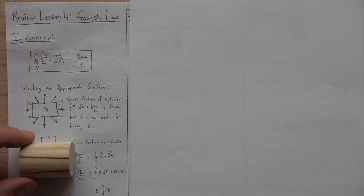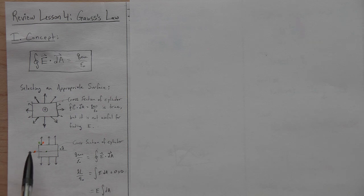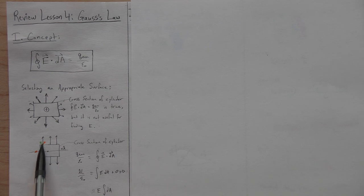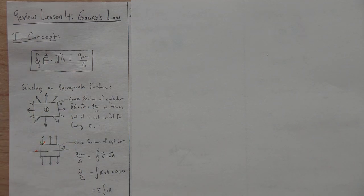Surrounding the wire with a cylinder works because if I take a portion of the wire and it's positive, it makes an electric field pointing directly away. Taking a symmetric point to the right at the same distance, the horizontal components cancel. So the electric field, if the wire behaves as infinite, points directly away from the wire — and it's constant all along the cylinder surface because all points are equidistant from the wire.